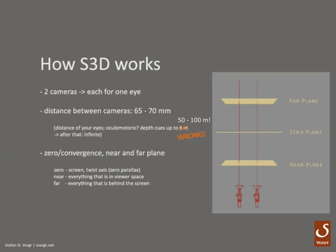Therefore: zero parallax. The near plane is also called negative parallax because the image presented to the left eye is further right than the image presented to the right eye, which resolves into squinting — a negative movement of your eyes. Everything ranging up to the far plane is called positive parallax. There is also a term called divergent parallax, which is like squinting outwards, but it is very unpleasant for the eyes, so I won't talk about it.